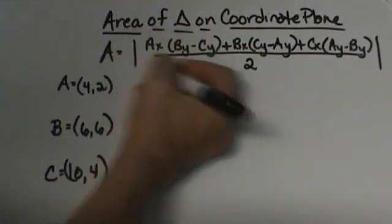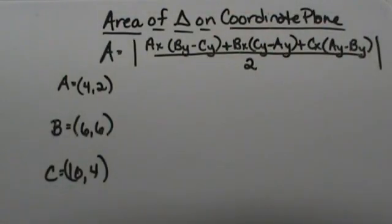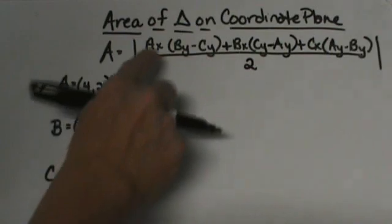Then notice I have an absolute value bar on it so if this ends up being negative I'm just going to take the positive answer because it's asking for the absolute value and area can only be positive. Let's work through these.